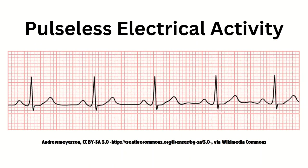Next, we have PEA, or pulseless electrical activity. It looks a lot like normal sinus rhythm. The issue is that there is no actual heartbeat from the patient, whether you're checking by palpating or the provider is checking with ultrasound — there won't be a heartbeat. That is why during a code you may hear the provider say, 'Is there a pulse with this rhythm?' because they want to make sure the patient is not in PEA, pulseless electrical activity.